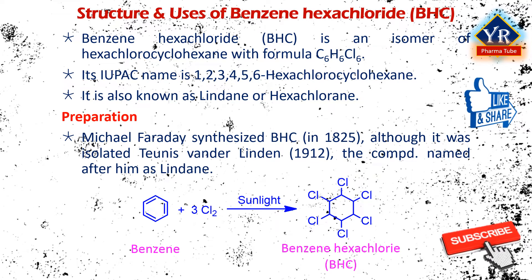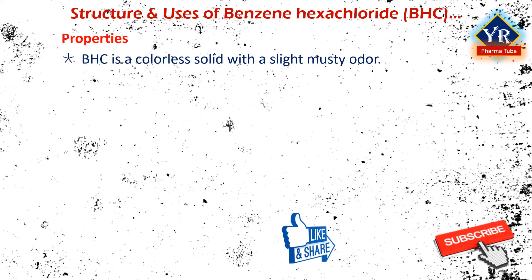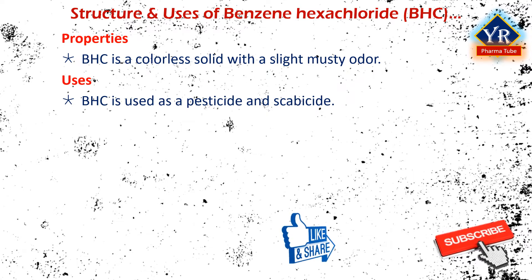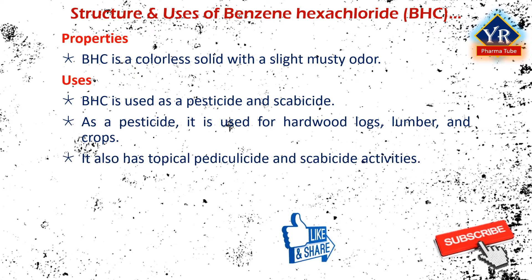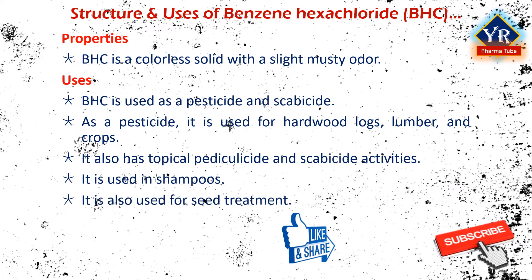In this reaction, benzene loses its aromaticity and changes into an alkane. The delocalization of pi bonds in the benzene ring is removed by addition of chlorine atoms to each carbon atom of the benzene ring. Benzene hexachloride is a colorless solid with a slight musty odor. It is used as a pesticide and scabicide. As a pesticide, it is used for hardwood logs, lumber and crops. It also has topical pediculocide and scabicide activities, probably due to its neurotoxic effects. It is used in shampoo preparation and also for seed treatment.